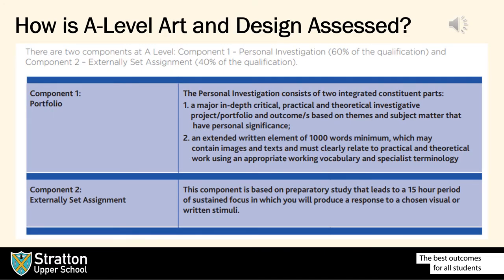How is A-Level Art and Design assessed? In year 12 you spend the year focusing on your foundational skills, and then in year 13 you move on to component 1, which is a personal investigation where you focus on an area you're most interested in. You develop that all the way up until February of year 13, where you will be given an extended assignment by the exam board with a theme that you can choose, which will finish with a final 15-hour sustained piece.